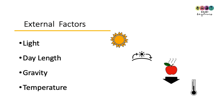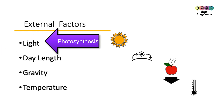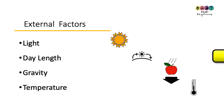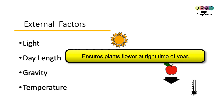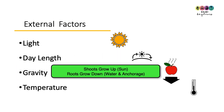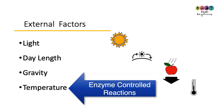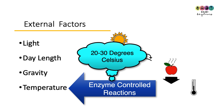Looking at the external factors: light is needed for photosynthesis — it's essential. Day length is also really important because it ensures that plants flower at the right time of the year, which is very important for their survival. Gravity ensures that roots grow down, which is important for absorption of water, minerals, and anchorage, and shoots grow up, which is important for absorbing sunlight. Temperature is important because enzyme-controlled reactions take place in a range of between 20 and 30 degrees Celsius.